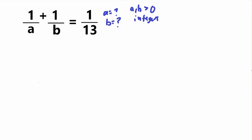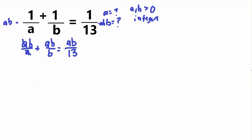We have a, b, and 13 in the denominators, so I'm going to try to get rid of all the denominators. First, I'm going to multiply both sides by ab. When you multiply ab to the numerators, ab times 1 is just ab, so we get ab over a plus ab over b equals ab over 13. On the left side, we can cancel matching numerator and denominator values, which leaves us with b plus a is equal to ab over 13.